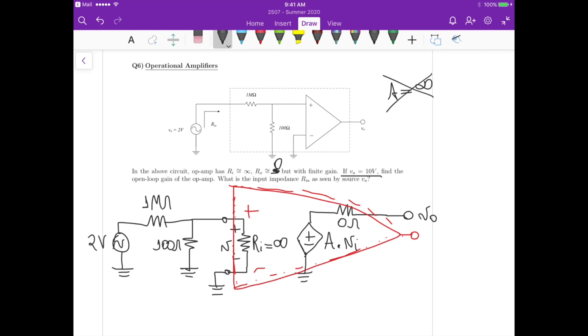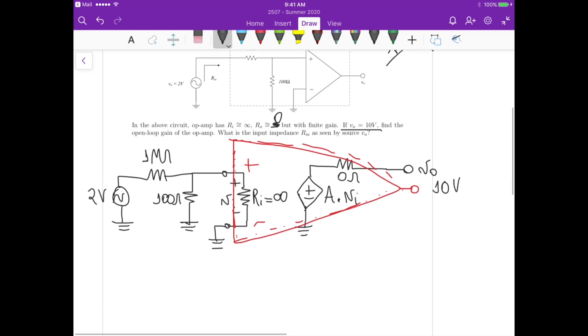This output resistance here is close to zero ohms, so this is kind of ideal for the output resistance. For the input resistance, it's also kind of ideal—it's infinite. But the gain A here is no longer infinite, so it's a finite gain. We know that V_out is equal to 10 volts, so here we have 10 volts.